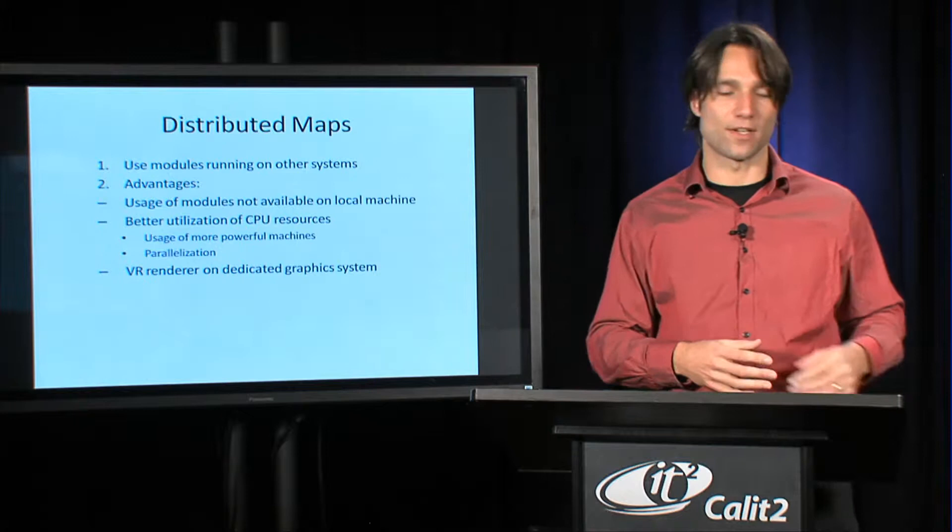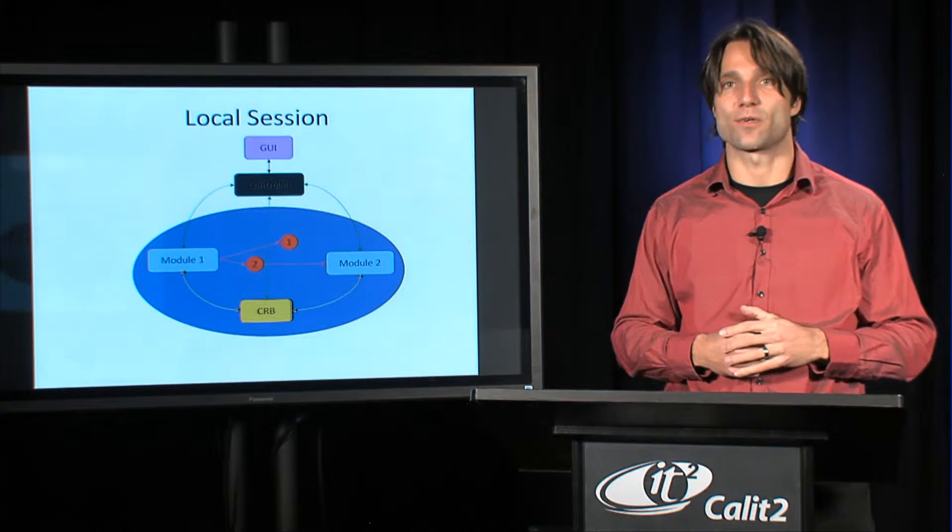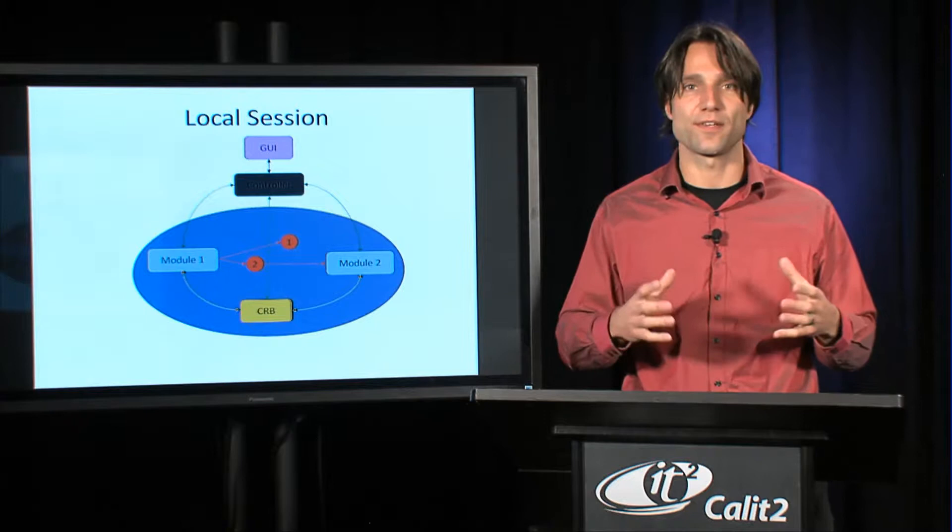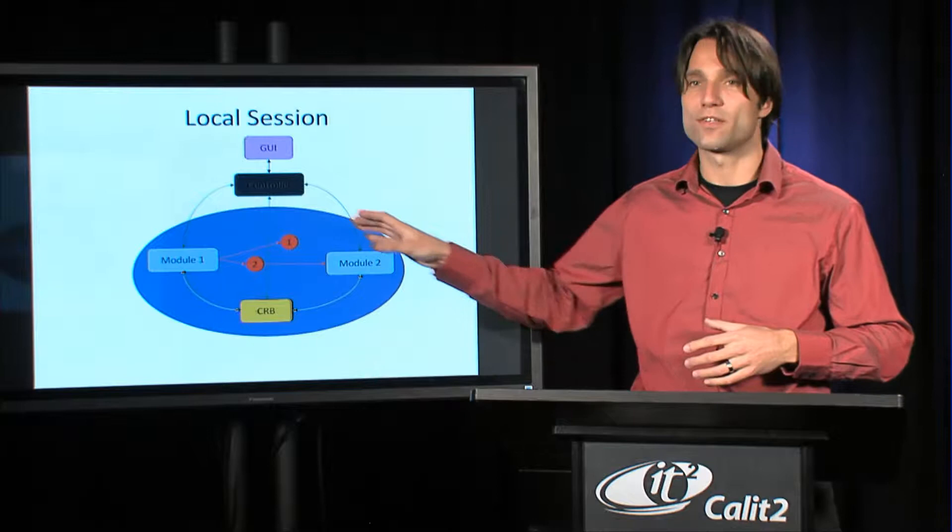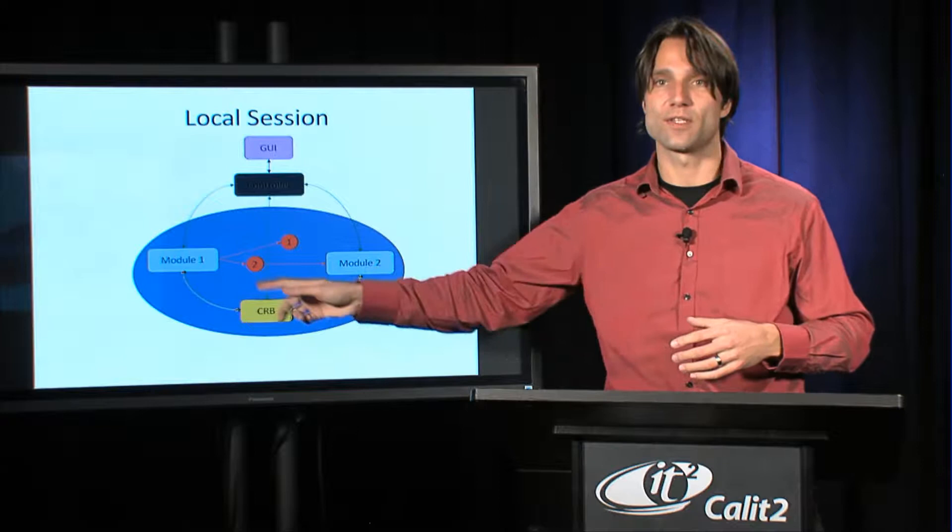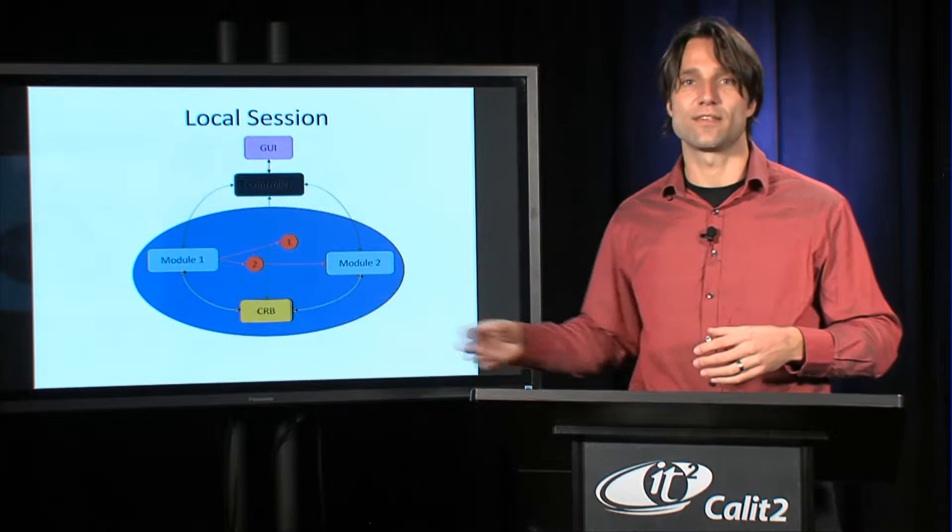I want to look a little bit more closely at how this works when modules run on different systems. This is an example for a local session where everything runs on the same system. We have a GUI, we have a controller, that's a Covice controller, it's a unit that manages the modules. Then we have a pool of modules, in this case module 1 and module 2, and they're coordinated by the CRB, the Covice Request Broker, that's the entity that allows these modules to talk to each other and exchange data.